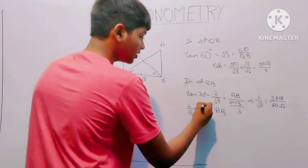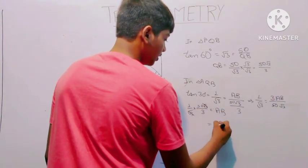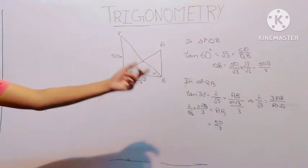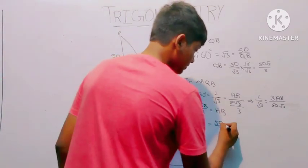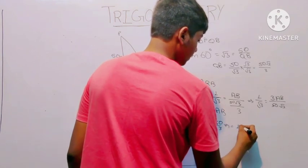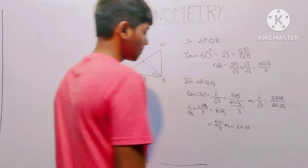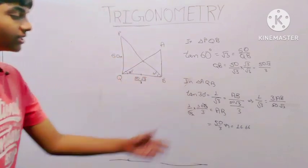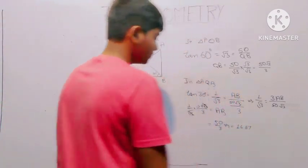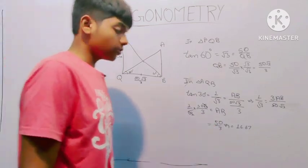Root 3 times root 3 gives 3, so the answer is 50 upon 3. That is 50 upon 3, which in decimal is approximately 16.67. So 16.67 meters was our answer to this question.